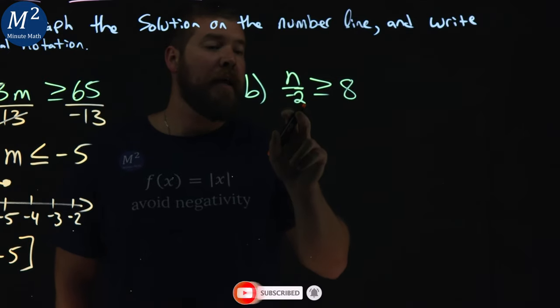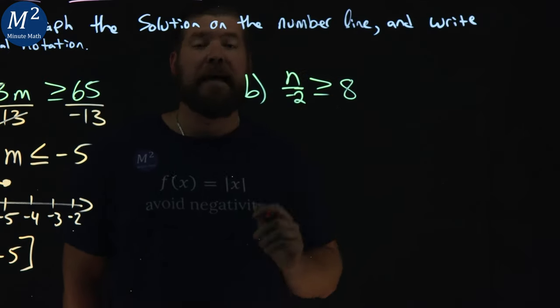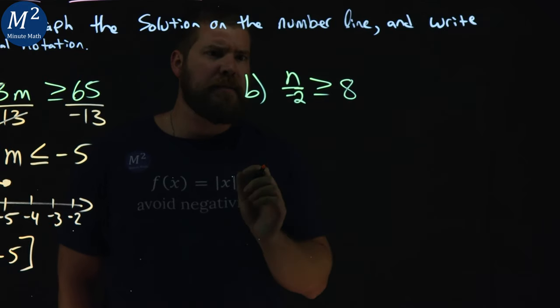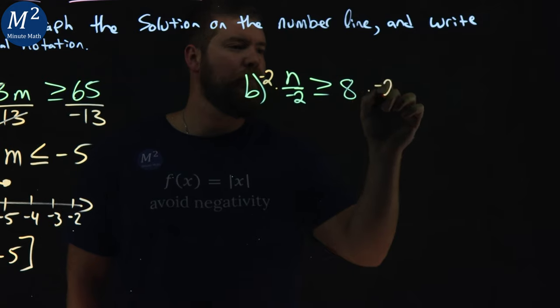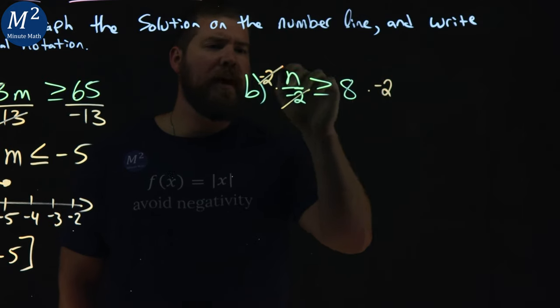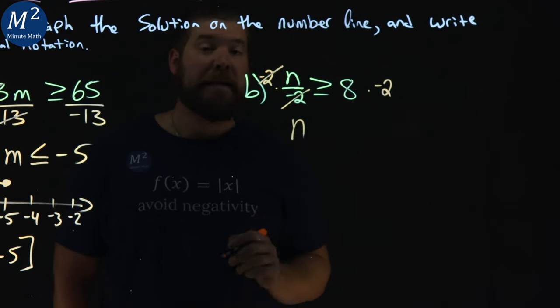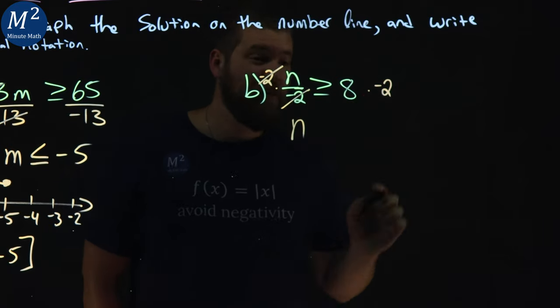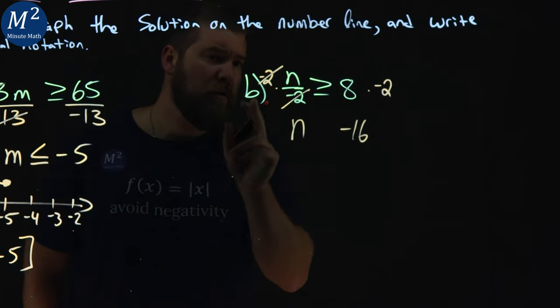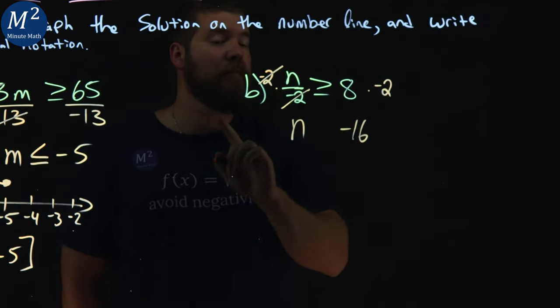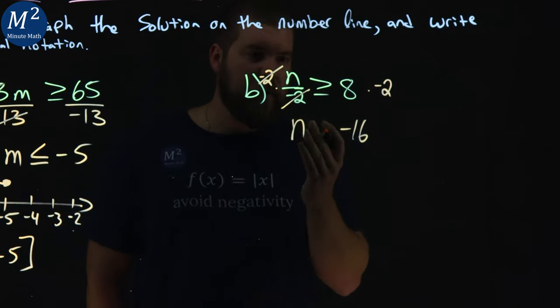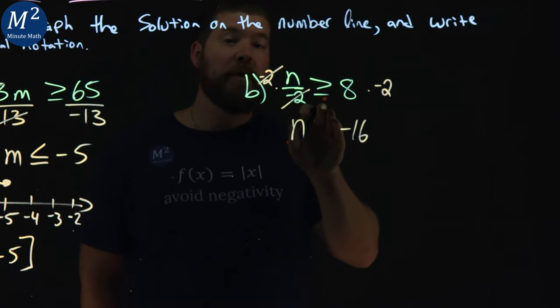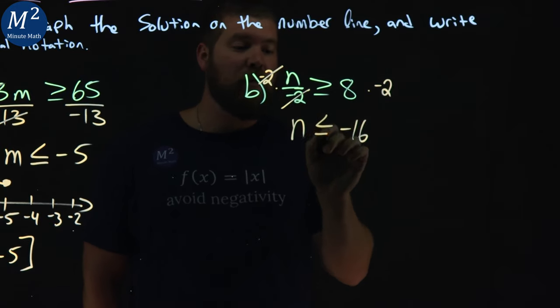We have n over negative 2 is greater than or equal to 8. We want to get n by itself, so we'll multiply both sides by negative 2. Negative 2s cancel, and we have n by itself. 8 times negative 2 is negative 16. But again, notice we're multiplying by a negative number over the inequality, so the sign now flips. Greater than or equal to becomes less than or equal to. So we have n is less than or equal to negative 16.